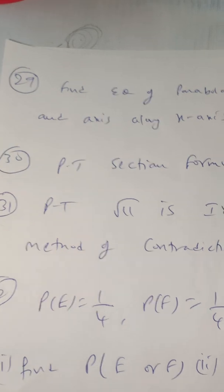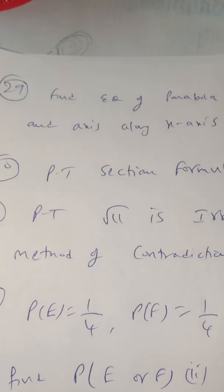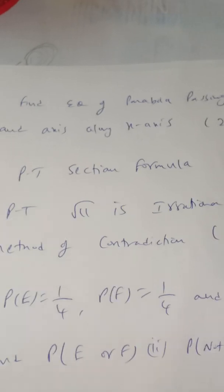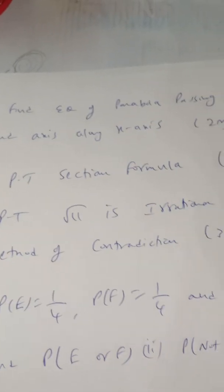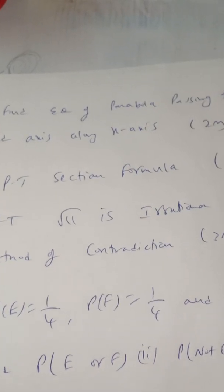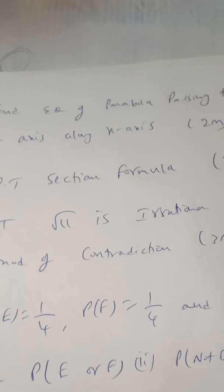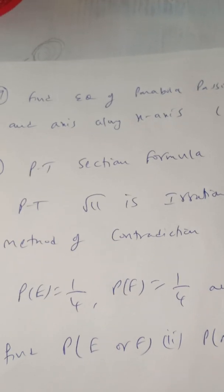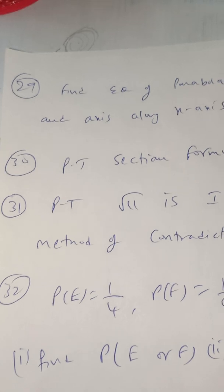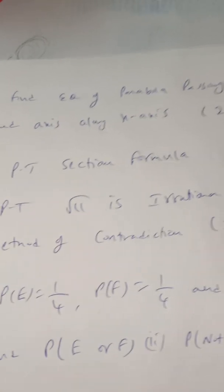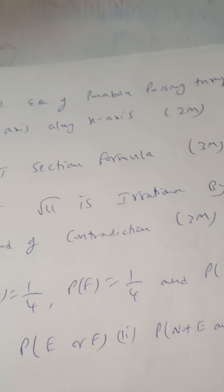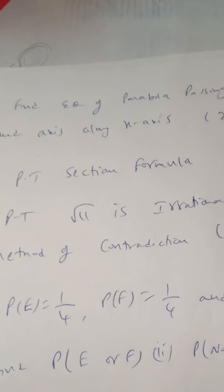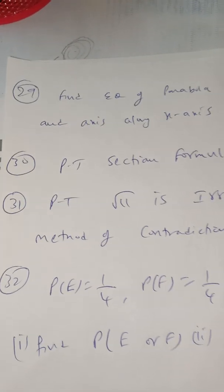Very compulsory — 100% — a question from 3D geometry: prove the section formula, which gives coordinates as ((mx₂ + nx₁)/(m+n), (my₂ + ny₁)/(m+n), (mz₂ + nz₁)/(m+n)). Also compulsory: prove that √11 is irrational by the method of contradiction. They can give √5, √7, or √11 — any of these by method of contradiction is a compulsory question in the final exam.